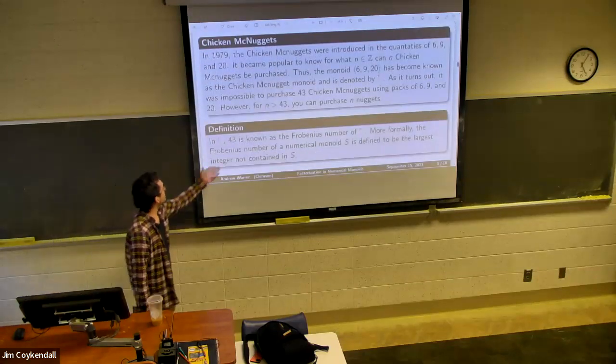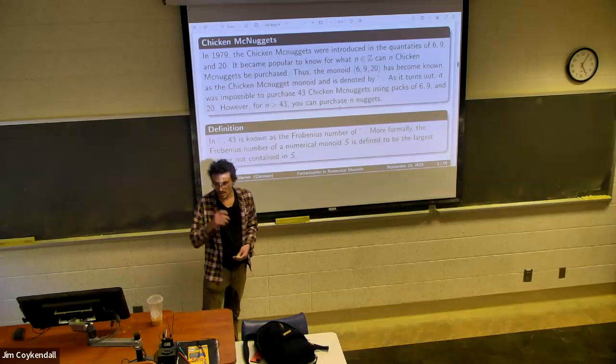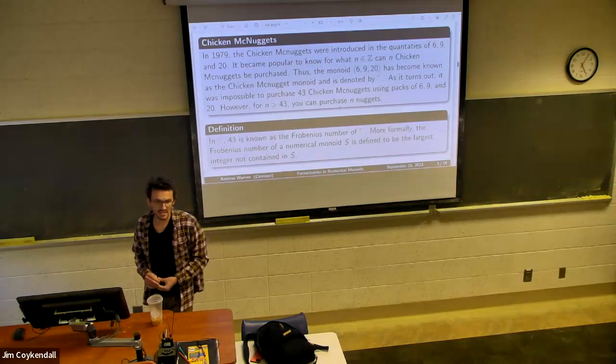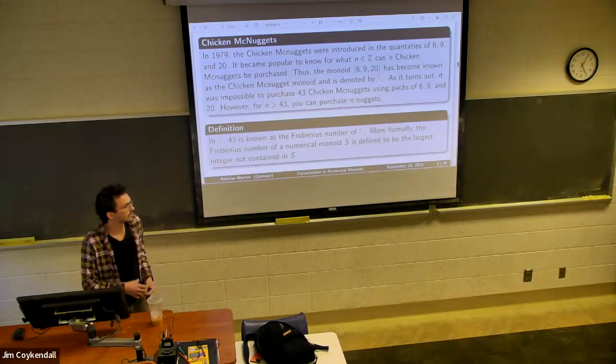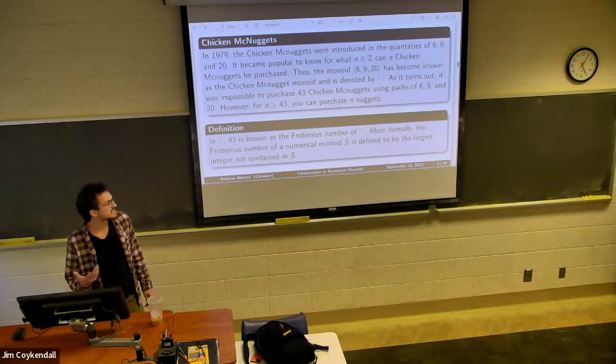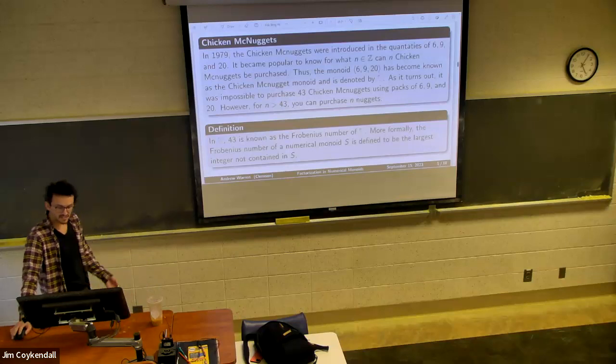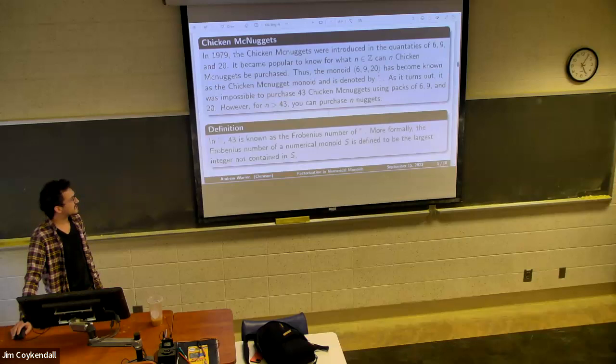So in this example, 43 is the Frobenius number. The Frobenius number is essentially just the largest integer that's not in your numerical monoid. And there's a lot of history and literature surrounding Frobenius number. And in general, calculating the Frobenius number is a difficult task.